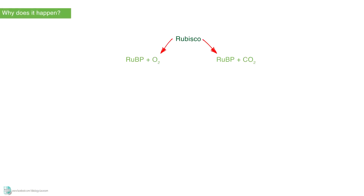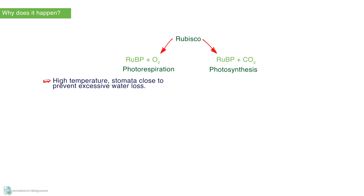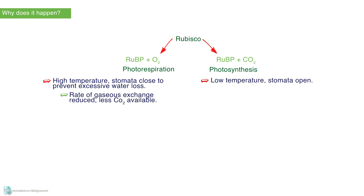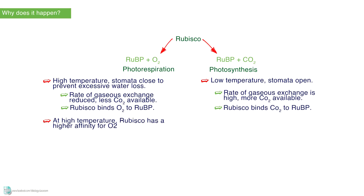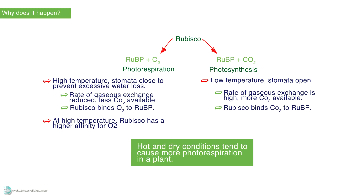Rubisco can bind either carbon dioxide or oxygen to RuBP. When the temperature is high, stomata of a plant close to prevent excessive water loss. Due to the reduced rate of gas exchange, less carbon dioxide is available, so Rubisco binds oxygen instead of carbon dioxide to RuBP and carries out photorespiration. Besides, Rubisco has a higher affinity for oxygen when temperature increases. In short, hot and dry conditions tend to cause more photorespiration in a plant.